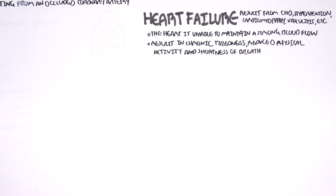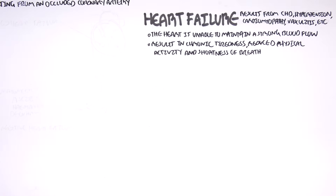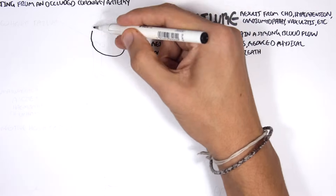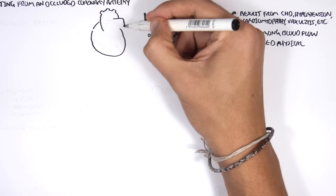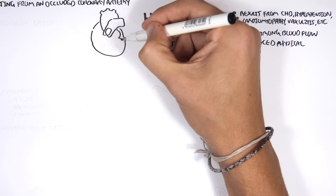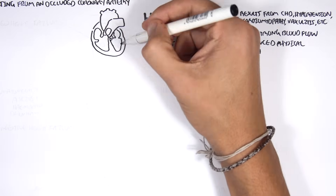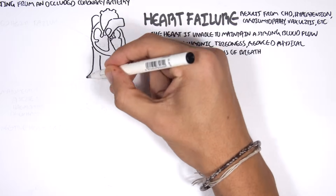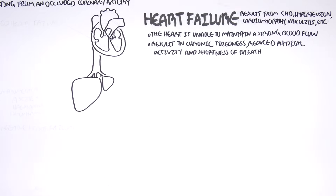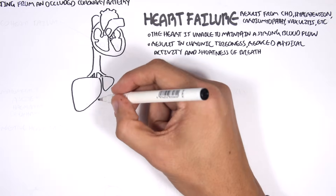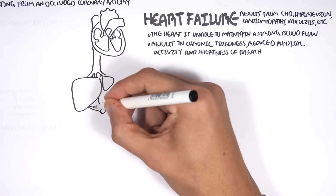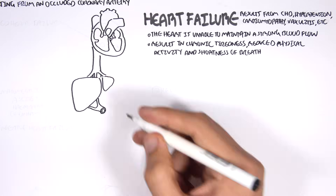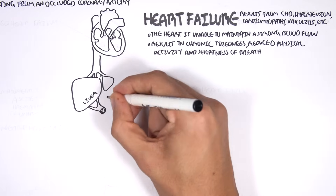Here we have the heart and its four chambers. We have the inferior vena cava, which connects with the liver via the hepatic vein. Coming out of the liver from the bottom, we have the portal vein.